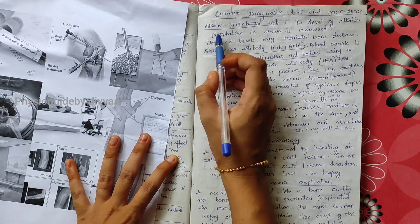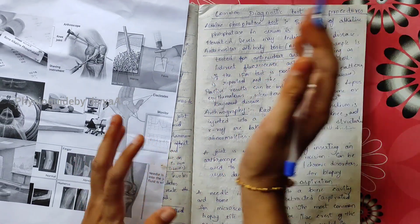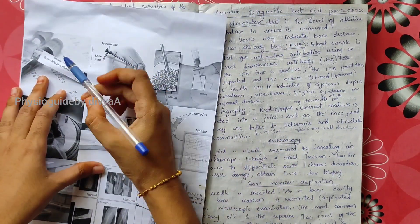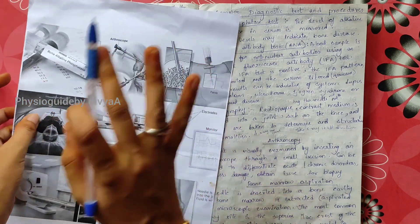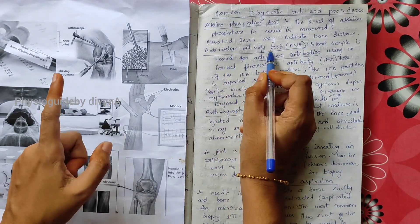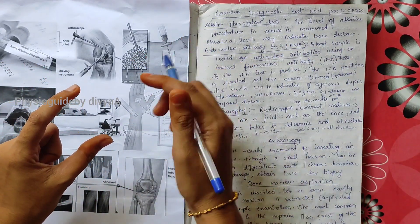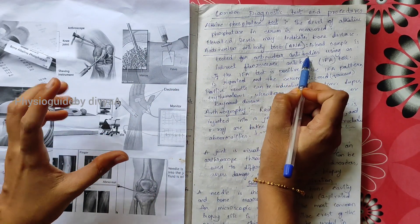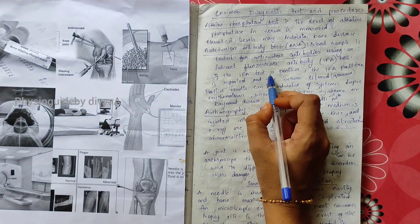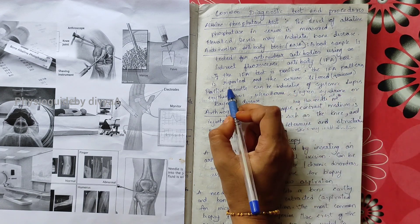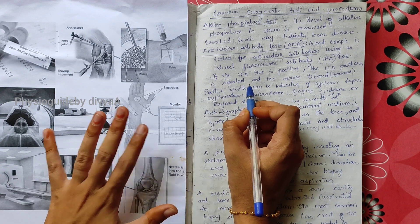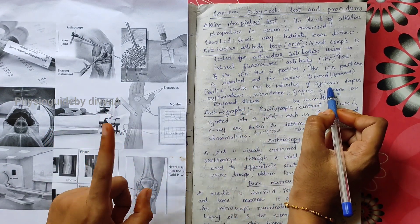First is the alkaline phosphate test. In this, the level of alkaline phosphate in serum is measured. If there is elevation, it may indicate any bone disease. Next is the ANA test, which is the anti-nuclear antibody test. In this, a blood sample is tested for anti-nuclear antibodies with the help of the indirect fluorescence antibody test. If this IFA test is positive, the serum is measured. A positive test can indicate the possibility of systemic lupus erythematosus, scleroderma, or Raynaud's disease.